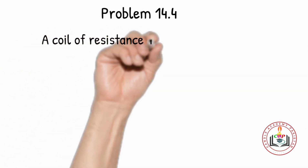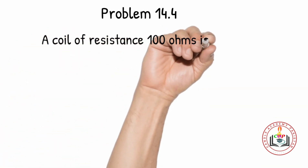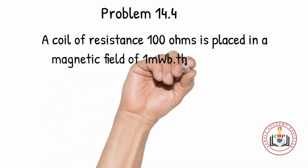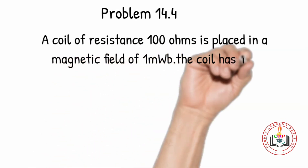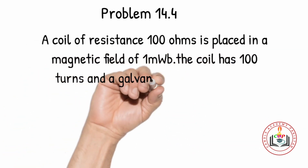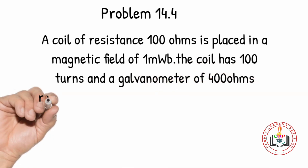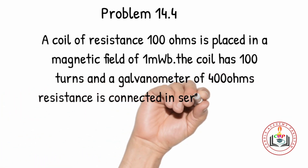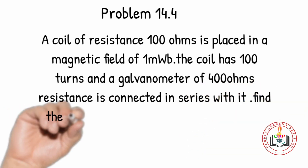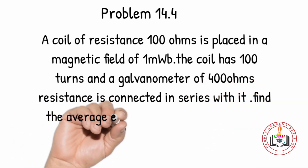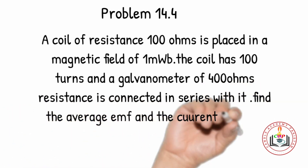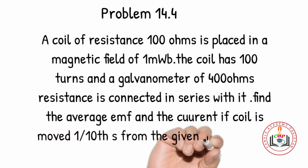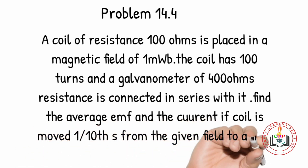Problem number 14.4: A coil of resistance 100 ohms is placed in a magnetic field of 1 milliweber. The coil has 100 turns and a galvanometer of 400 ohms resistance is connected in series with it. Find average EMF and current if the coil is moved in 1/10 seconds from the given field to a field of 0.2 milliwebers.